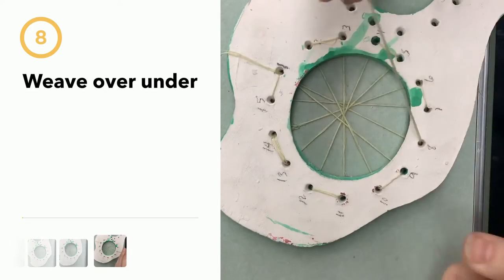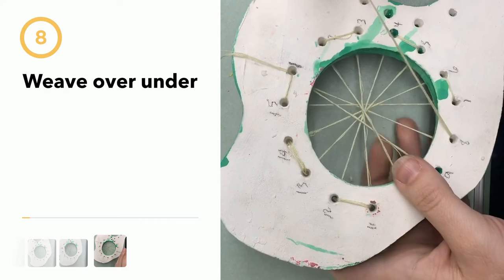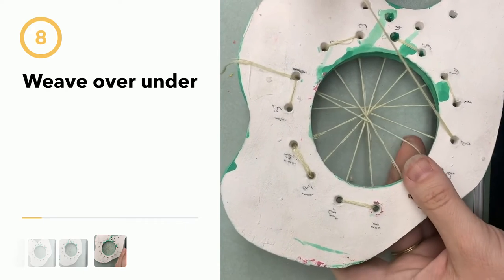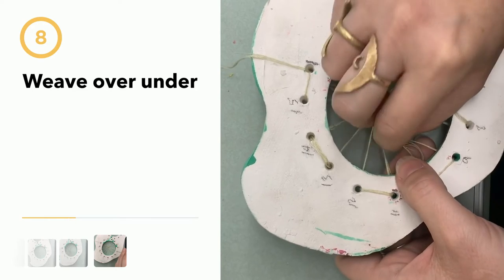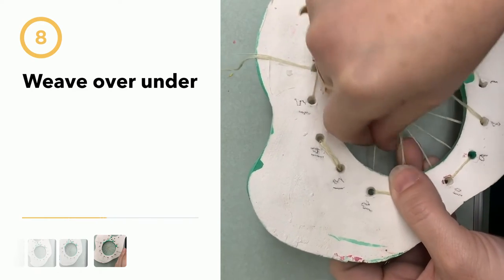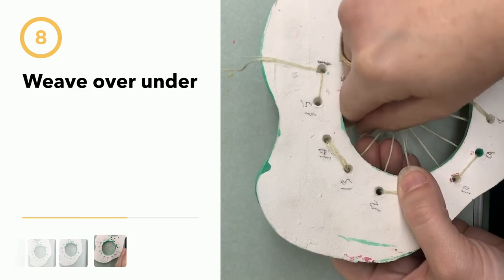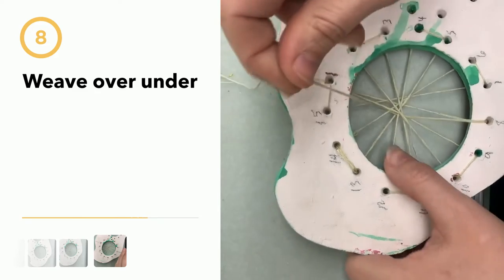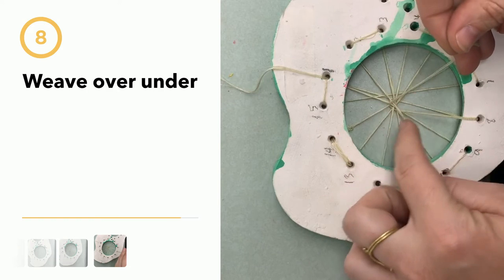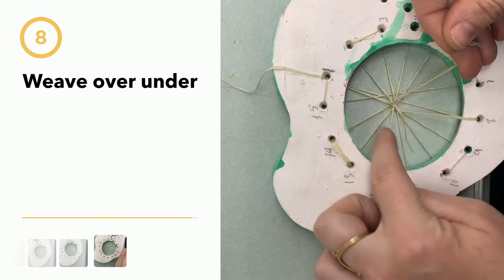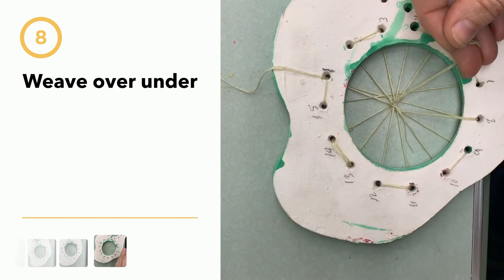Whatever little bit you have left over, that is going to be the tail that you start weaving with. So from here, you could leave your needle on if you want, but I'm just going to start over, under, over, under, over, under. And if you just keep doing that, what's going to happen is it's going to form this tight little circle in the middle and then you can add yarn on from there.